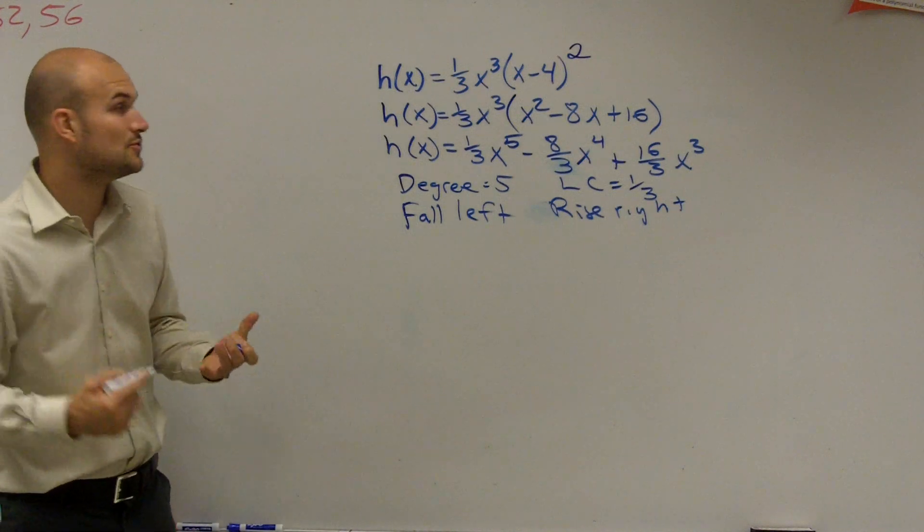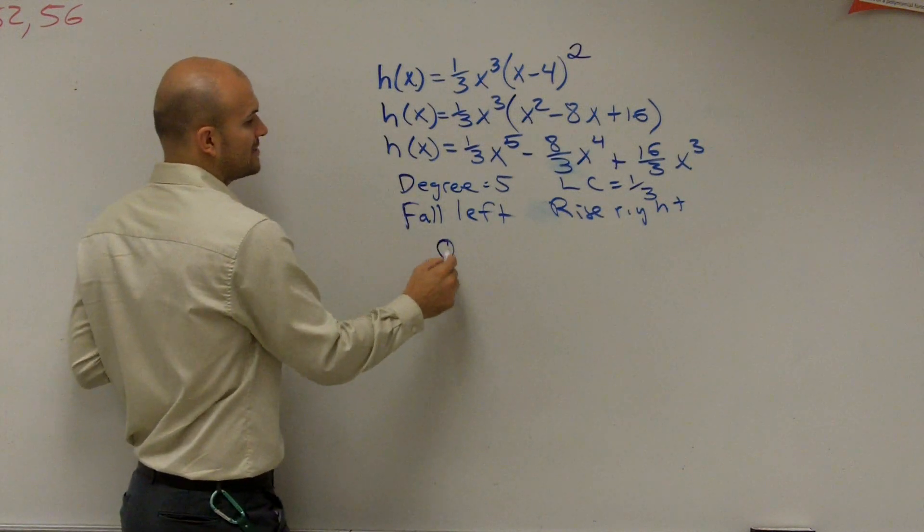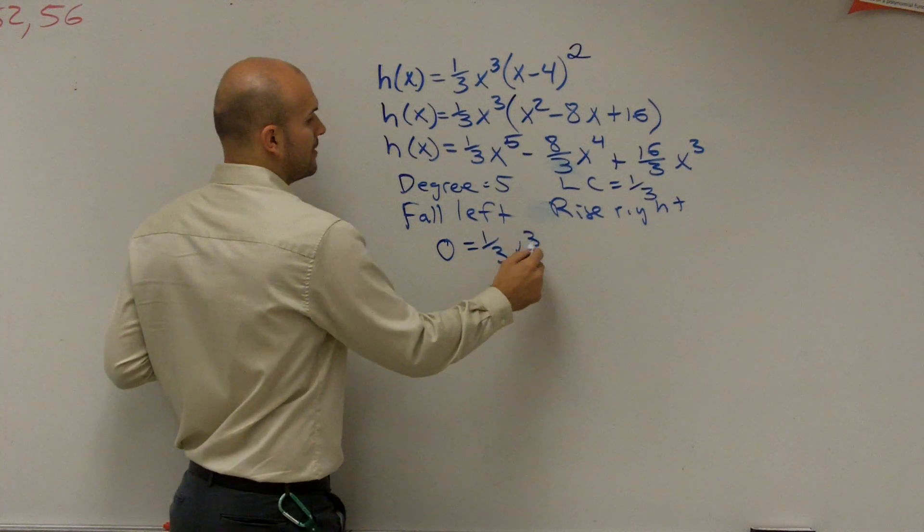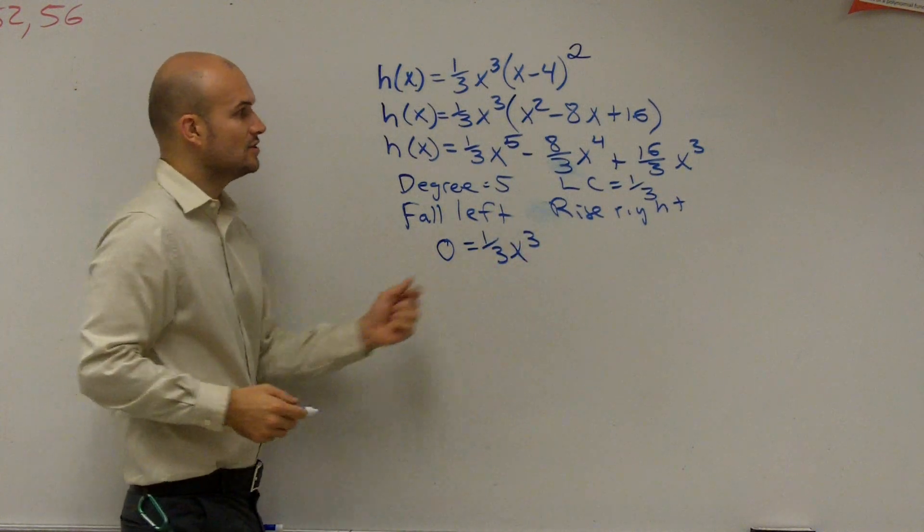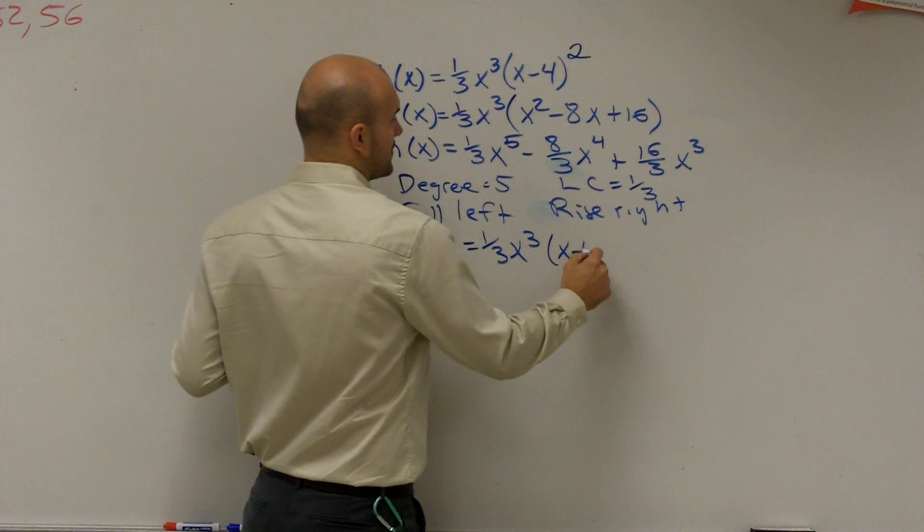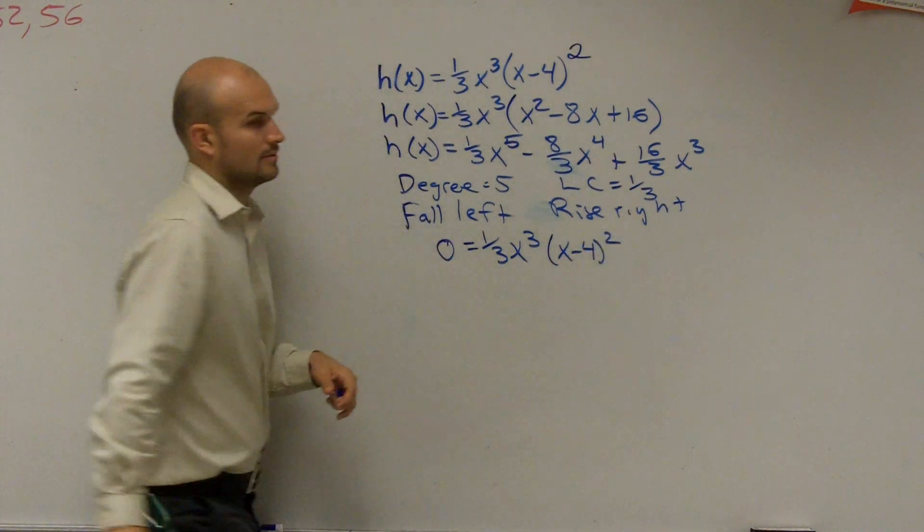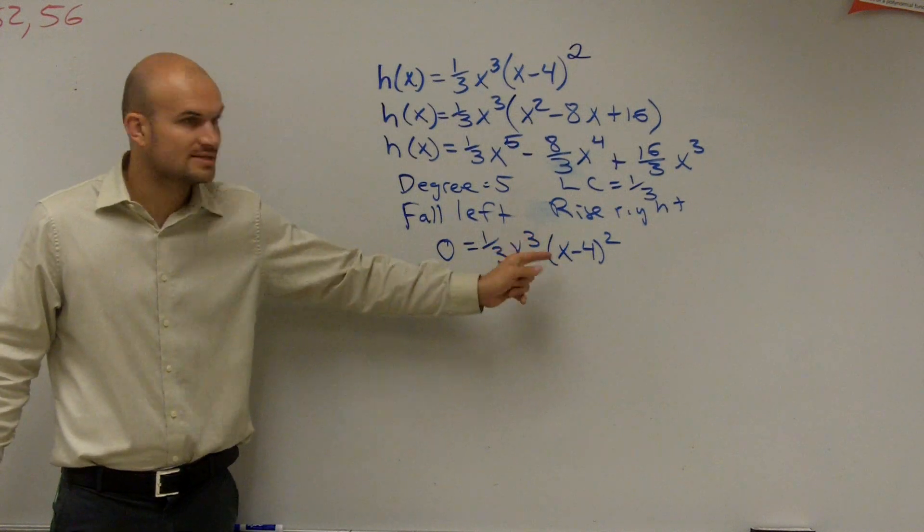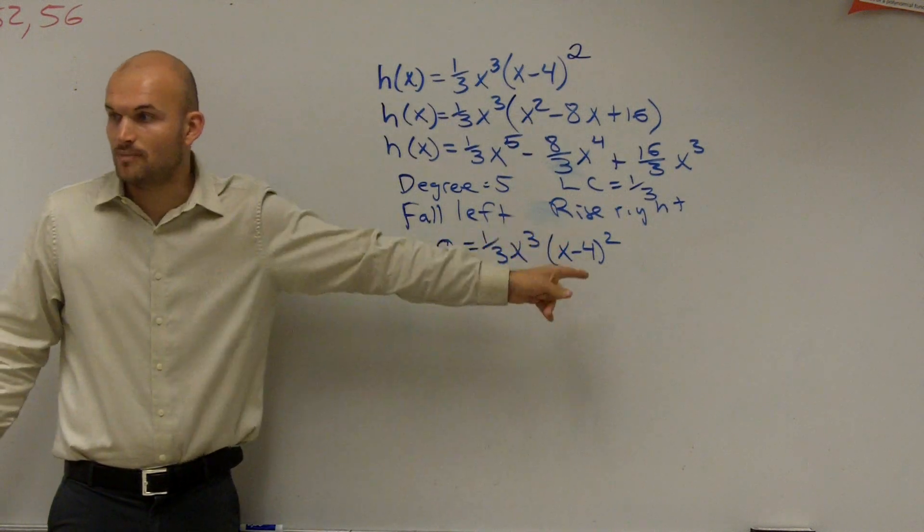The next thing we need to look at is the zeros, and here's the really cool thing about how this problem is already given to us. The zeros are already set in factored form. What I have is I already have two factors multiplied by each other. So what I can do here now is separate these. These are two factors multiplied by each other.